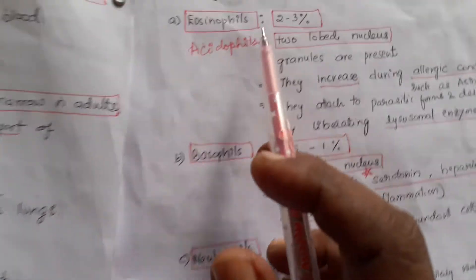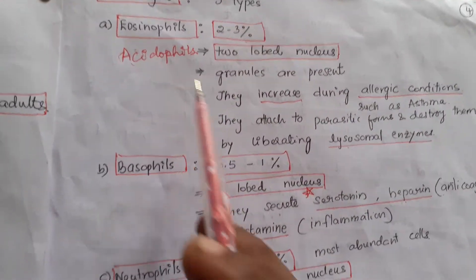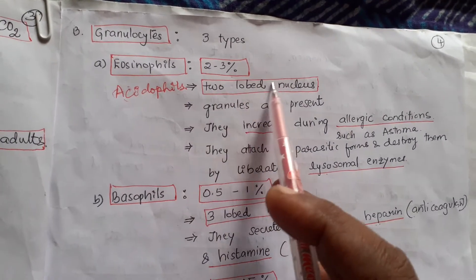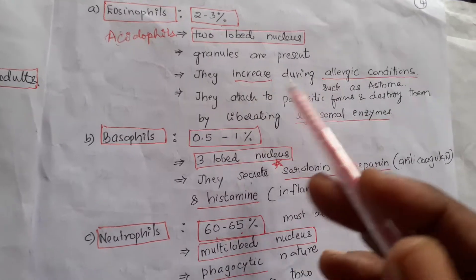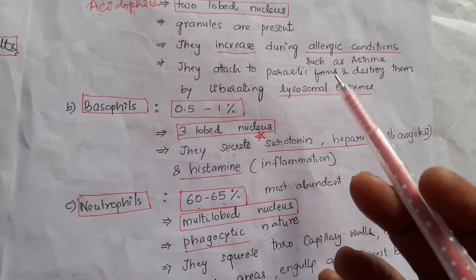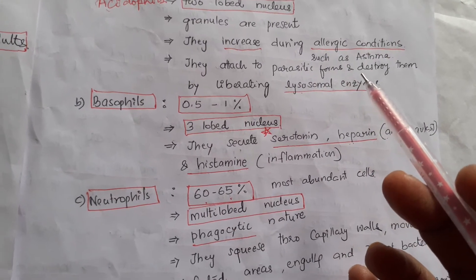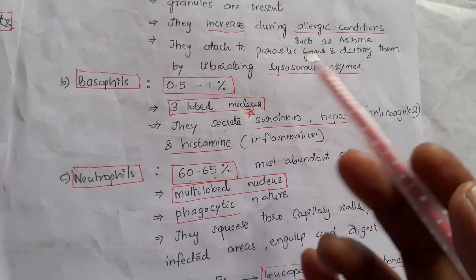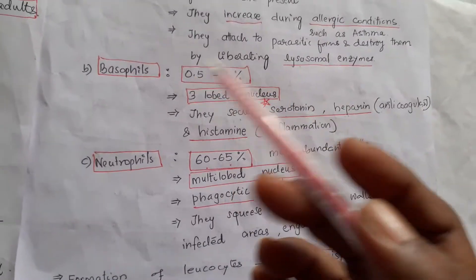Granulocytes are of three types: eosinophils (acidophils), basophils, and neutrophils. Eosinophils constitute about 2 to 3 percent and have a two-lobed nucleus with granules present. They increase during allergic conditions and attach to parasites that enter the body, destroying them by liberating lysosomal enzymes.